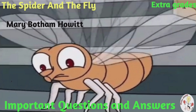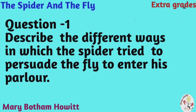Now let us start with question number one. My first question is: describe the different ways in which the spider tried to persuade the fly to enter his parlor. With a charming invitation into his home, the spider is trying to entice the fly. He describes his parlor as the prettiest and hence arouses a sense of inquisitiveness in the fly.